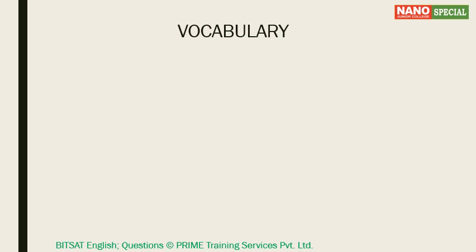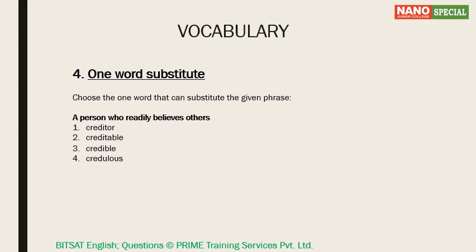The next question type is 'one word substitute.' Here, a phrase is given and you are supposed to replace it with one particular word. Let's look at an example: 'Choose the one word that can substitute the given phrase.' The phrase is: 'a person who readily believes others.' You've got to replace this phrase with a single word.